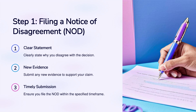Step 1: Filing a Notice of Disagreement (NOD). Clear Statement: clearly state why you disagree with the decision. New Evidence: submit any new evidence to support your claim. Timely Submission: ensure you file the NOD within the specified timeframe.